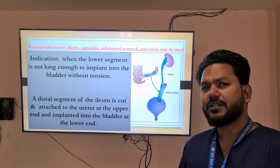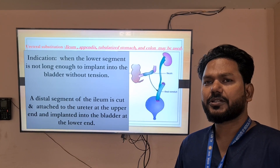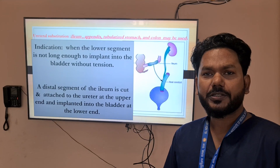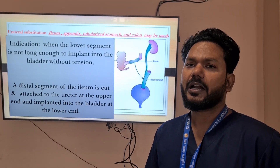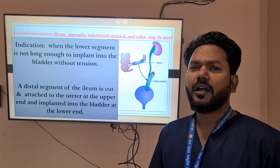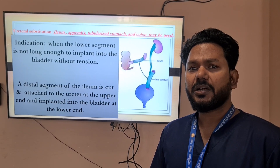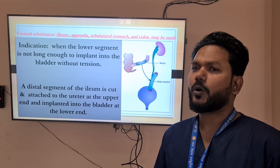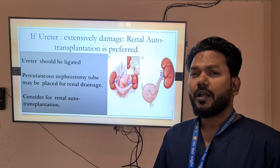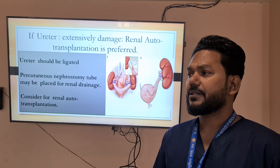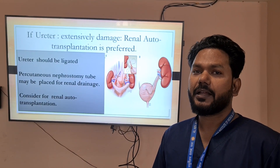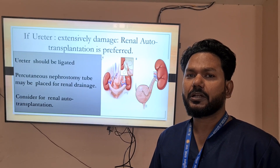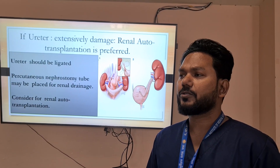Ureteral substitution with ileum, appendix, stomach, or colon is indicated when the lower segment is not long enough to implant into the bladder without tension. A distal segment of ileum is cut and attached to the ureter at the upper end and implanted into the bladder at the lower end. If the ureter is extensively damaged and reconstruction is not possible, ligate the ureter, perform percutaneous nephrostomy, and consider renal autotransplantation.